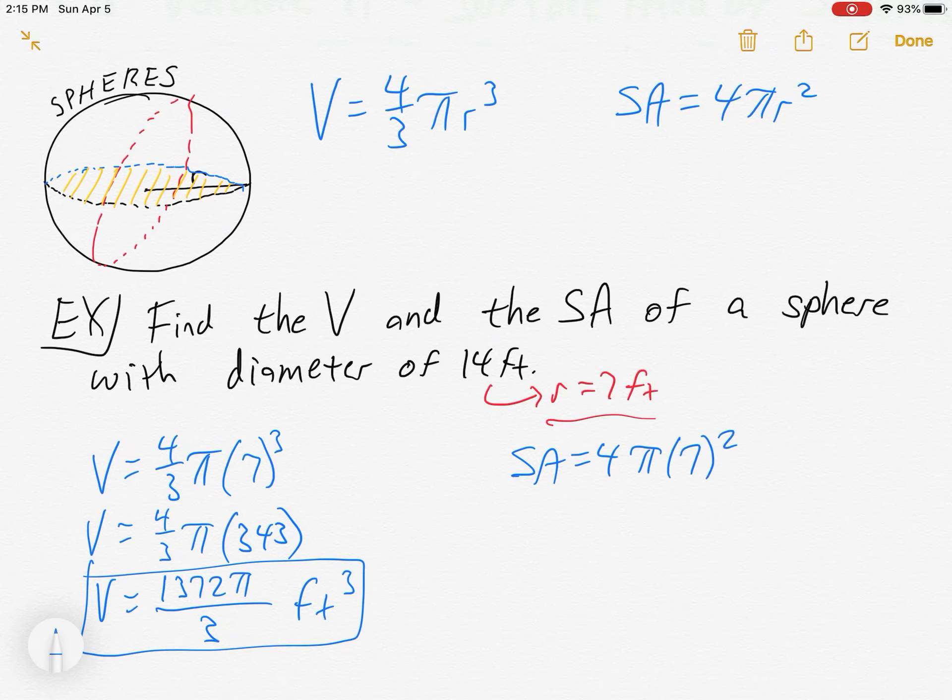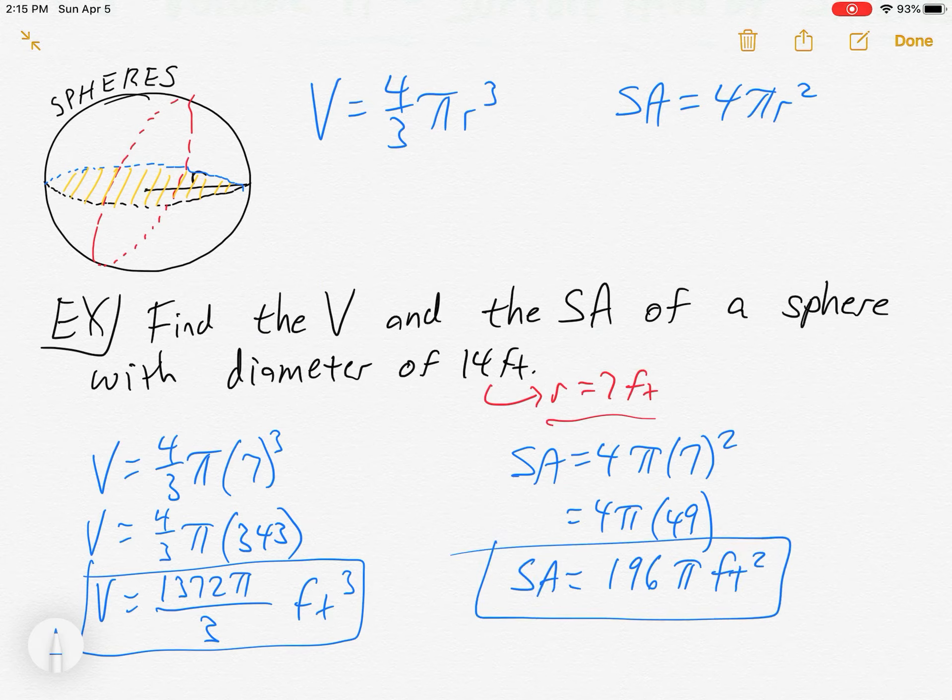For surface area, a little easier formula, 4 pi r. We just got to square it this time. So 4 pi times 49. Now, that we could probably do in our head. 4 times 49 is 196 pi. And these units are squared.